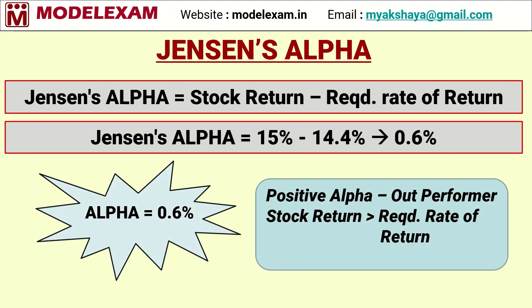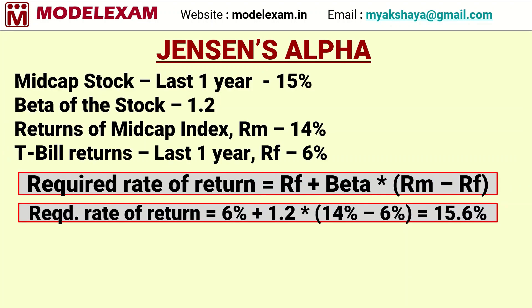Here it is a positive alpha. It means that the stock is an outperformer — it has done well when compared to the benchmark or the market. Stock return is greater than required rate of return. There can be a possibility of negative alpha too.